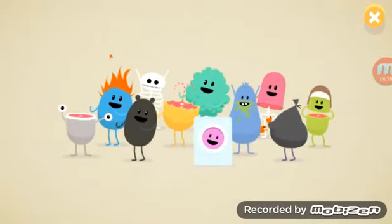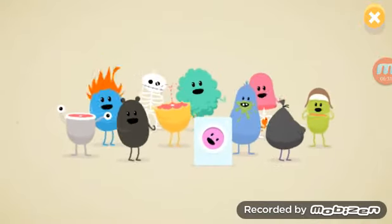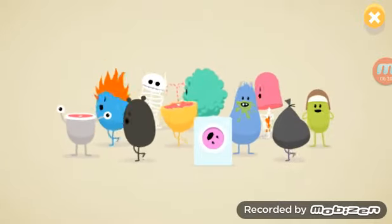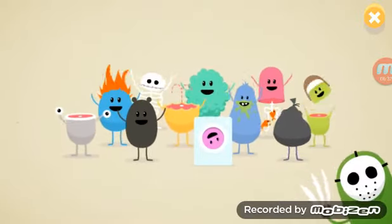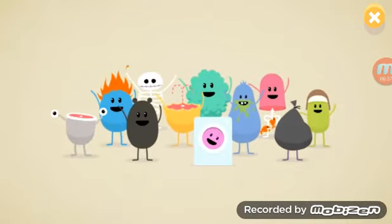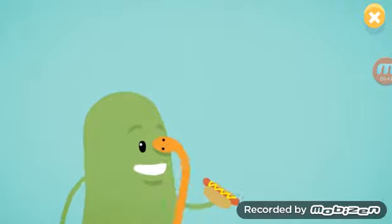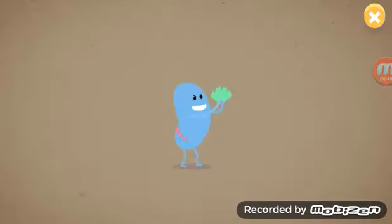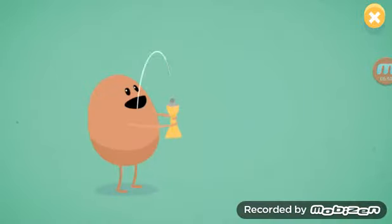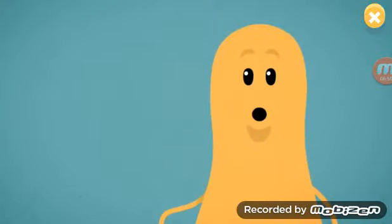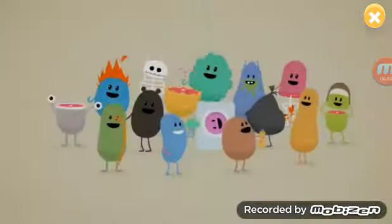Dumb ways to die, so many dumb ways to die. Dumb ways to die, so many dumb ways to die. Keep a rattlesnake as a pet, sell both your kidneys on the internet, eat a tube of super glue. I wonder what's this red button do? Dumb ways to die.